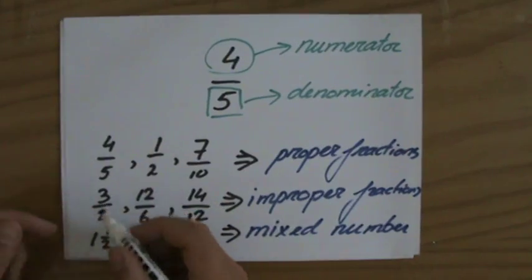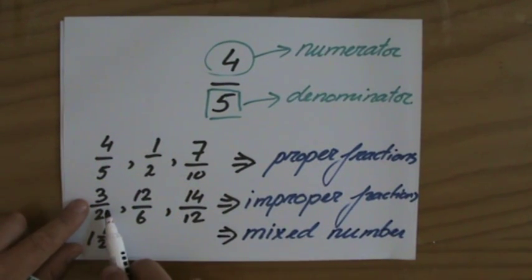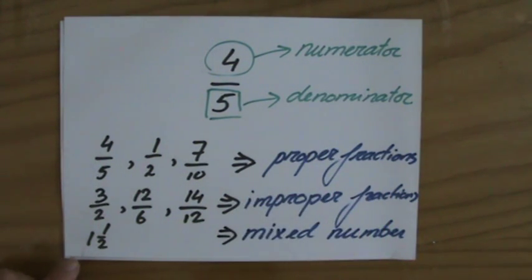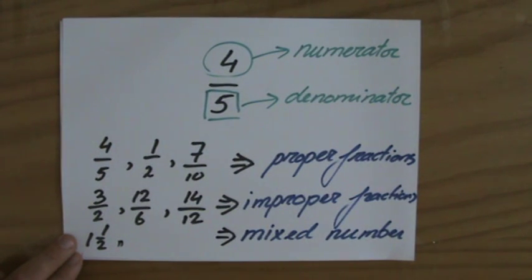Mixed numbers are for instance 1 and a half. 3 over 2, the improper fraction, as a mixed number is 1 and a half. 12 over 6, well that would be 2. But 14 over 12, that is 1 and 2 over 12, so 1 and 1 over 6, and that's also a mixed number.